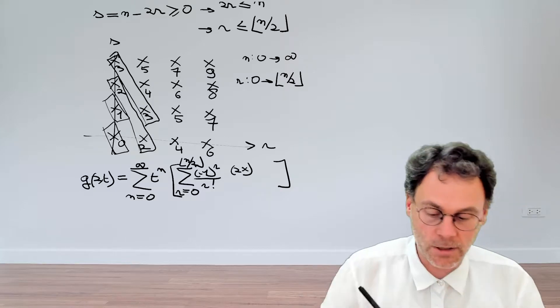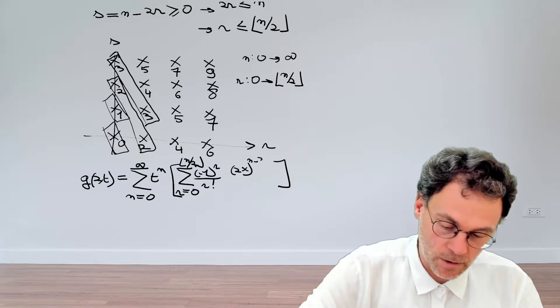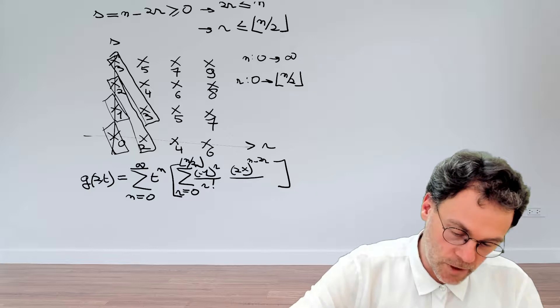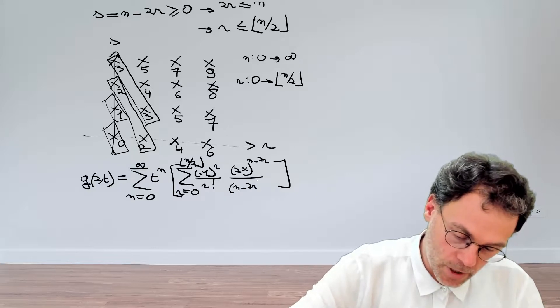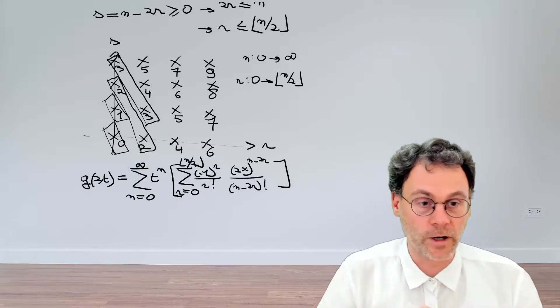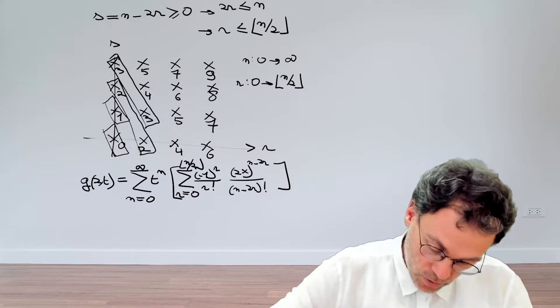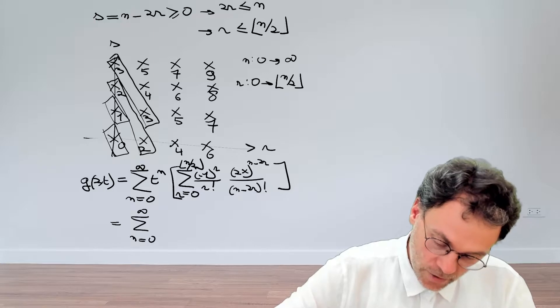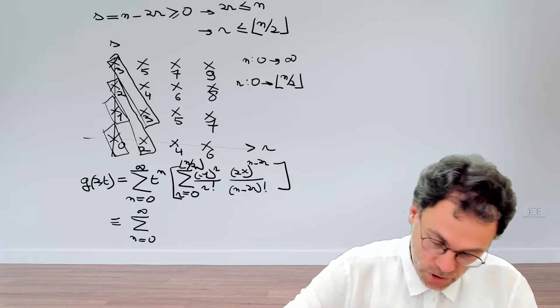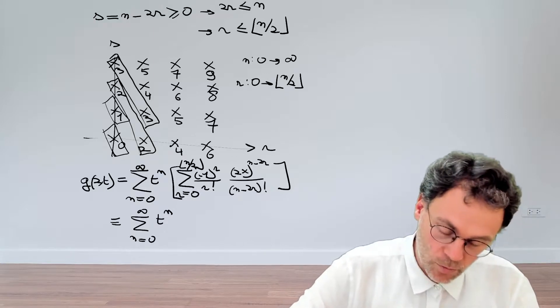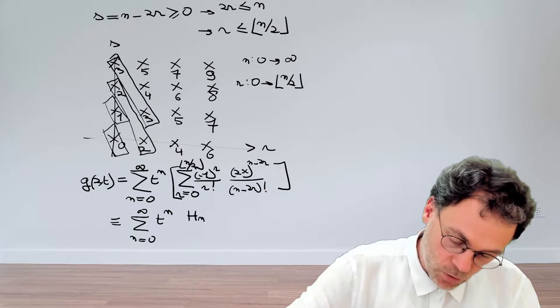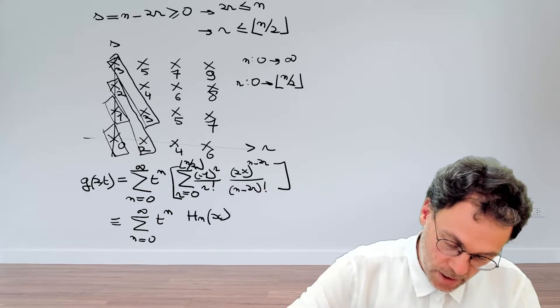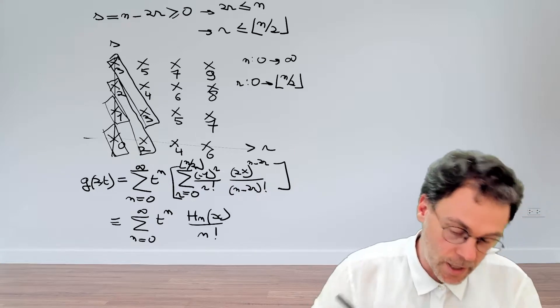We have 2x to the power of n minus 2r divided by (n minus 2r) factorial. And that, we know, is equal to the summation of n going from 0 to infinity, by definition, I would say, of t to the power of n, our Hermite polynomial of order n, H_n(x), divided by n factorial.